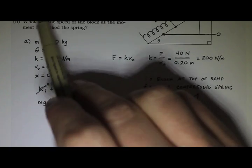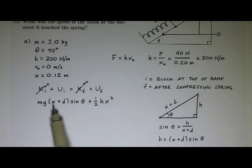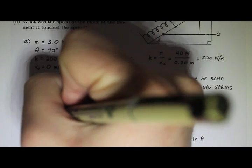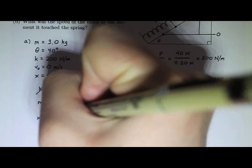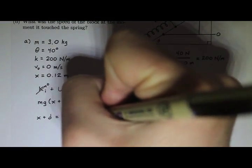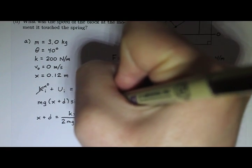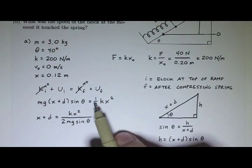And I'm solving for how far did the block travel down the incline? I'm solving for X plus D. So, there's X plus D right there. I can actually just solve for it right now. X plus D equals, and then I want to divide the MG sine theta over to the other side. So, KX squared over two MG sine theta. And then in my numerator, I have a KX squared. The two is from the half right there.